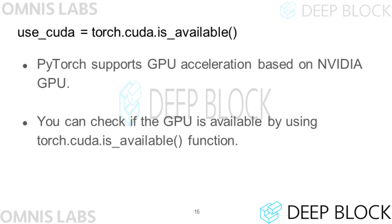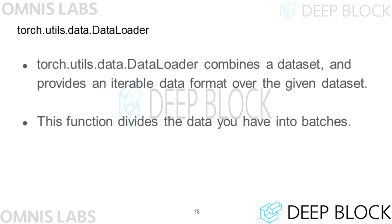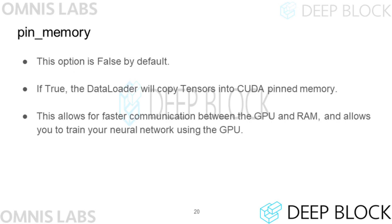PyTorch supports GPU acceleration. Whether the computer supports GPU acceleration can be checked with the isAvailable function. The next line specifies the device used to load the model. The data loader is responsible for breaking the data into batches. If you pass the float tensor data as an argument and set batch size, the data loader loads batch size data to the device at a time. The numWorkers parameter is set to 0 by default and should be set to 1 if GPU acceleration is available. The pin_memory parameter must also be set to true when using GPU acceleration.